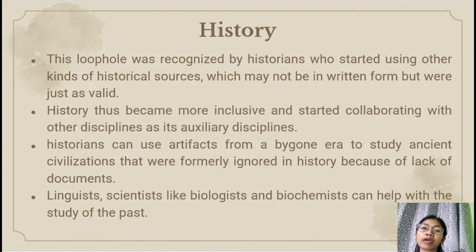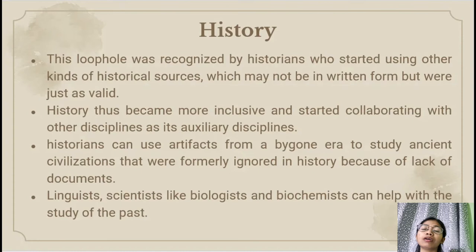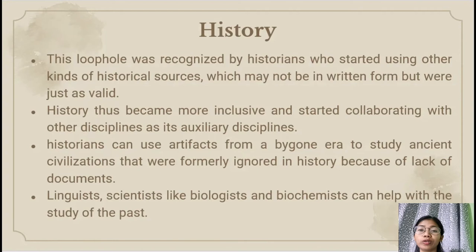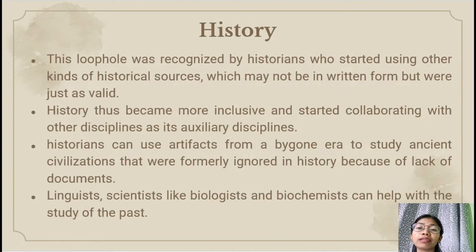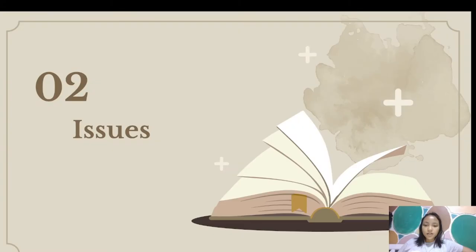History has become more inclusive and started collaborating with other disciplines as its auxiliary disciplines. With the help of archaeologists, historians can use artifacts from a bygone era to study ancient civilizations that were formerly ignored in history because of lack of documents, so that even without documents from the government, they can know the history of every individual, elite, or even the indigenous group. For linguists, they can trace the historical evolutions and past connections among different groups by studying language and its changes. For scientists like biologists and biochemists, they can help with the study of the past through analyzing genetic and DNA patterns of human society.